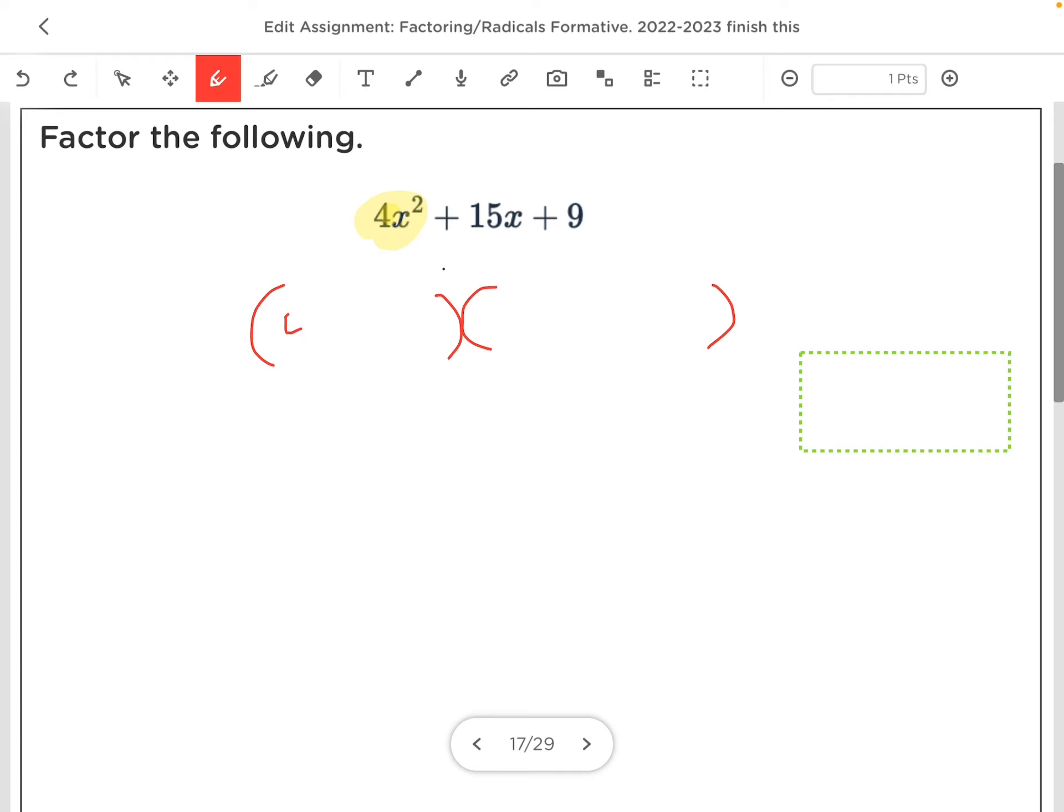So I'm going to try 2x and 2x, because I usually try the two numbers closest together. And now my other two factors here could be 9 and 1, or perhaps 3 and 3.